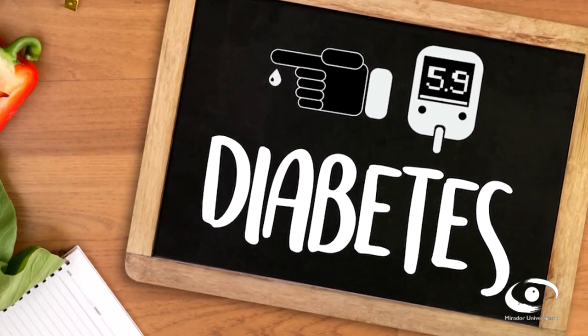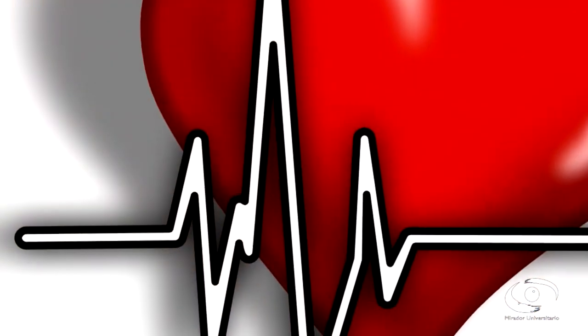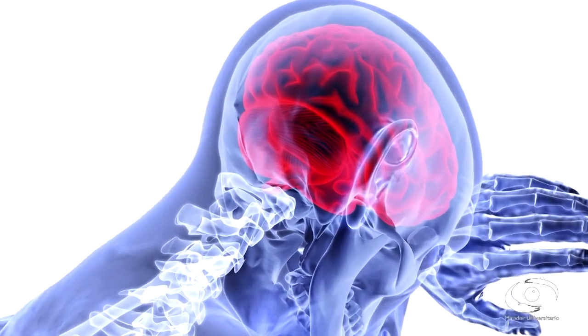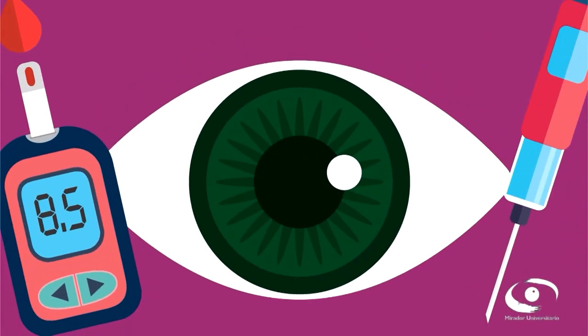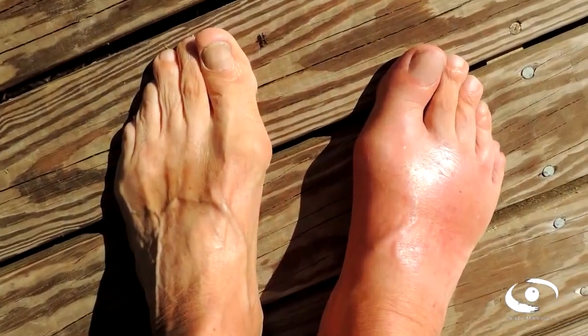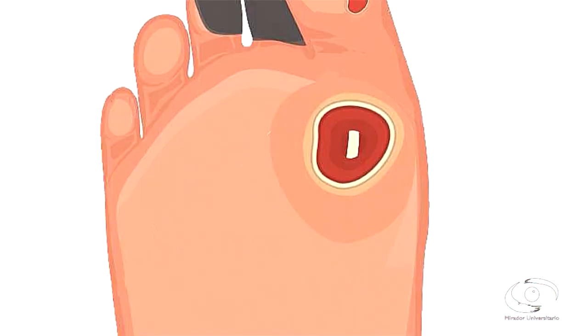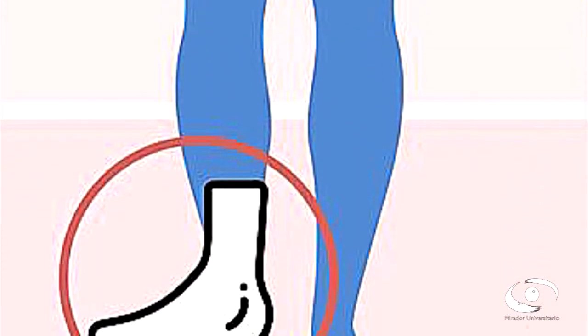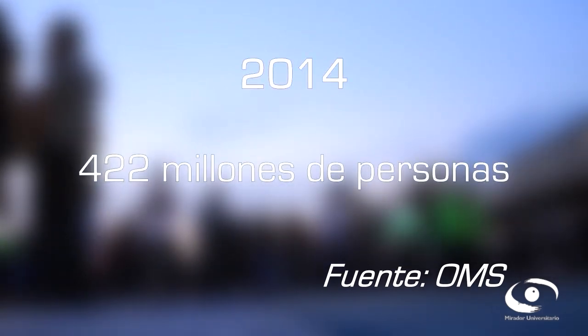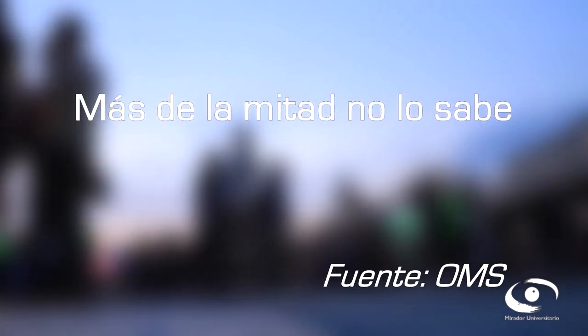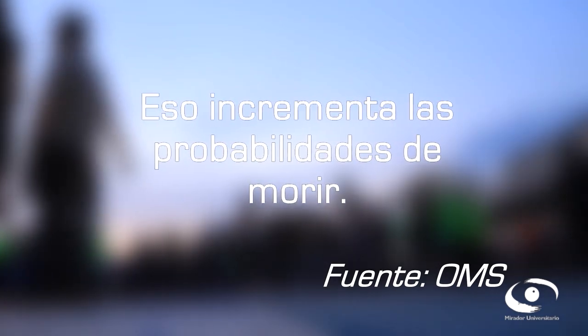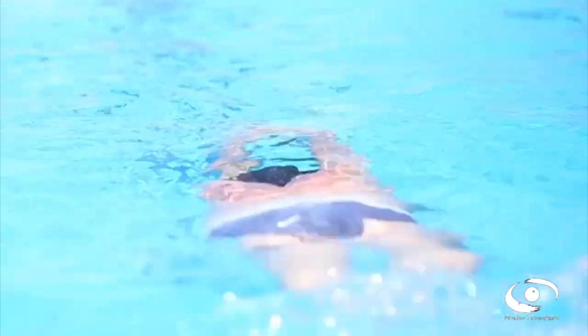La diabetes puede provocar problemas cardiovasculares como ataques cardíacos, accidentes cerebrovasculares y reducción del flujo sanguíneo, así como insuficiencia renal, pérdida de la visión, daños neurológicos como neuropatía de los pies, úlceras en los pies, infección y finalmente la amputación de los mismos. De acuerdo con la OMS, en 2014 hubo 422 millones de personas con diabetes. De estos casos, más de la mitad no lo saben, lo que incrementa las probabilidades de mortalidad. Cuidar tus hábitos es muy importante para mantenerse saludable.